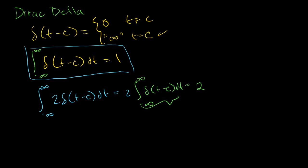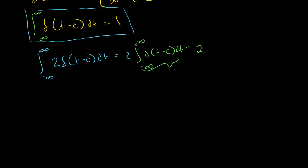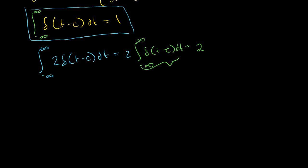It's an interesting function. It can help model things that kind of jar things all of a sudden — they impart a fixed amount of impulse on something, a fixed amount of change in momentum. We'll understand that more in the future. But let's get the mathematical tools completely understood and figure out what the Dirac delta function does to the Laplace transform when we multiply it times some function.